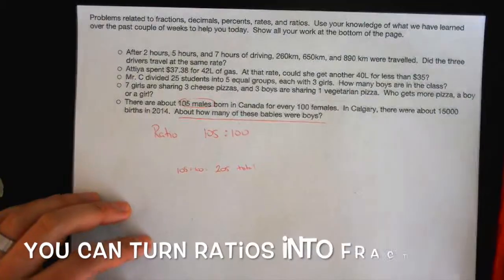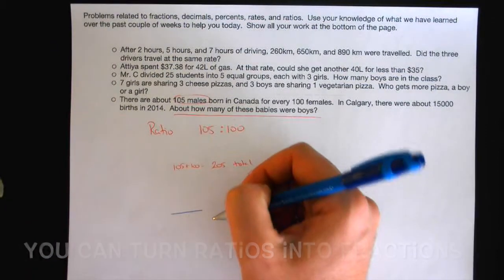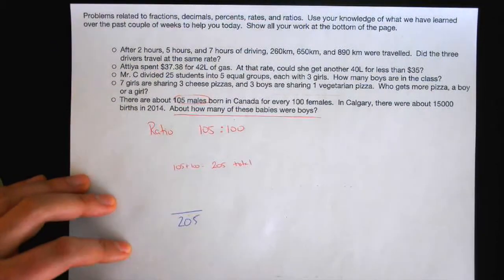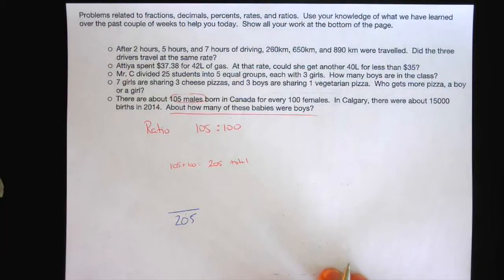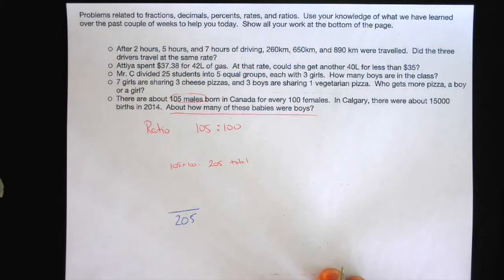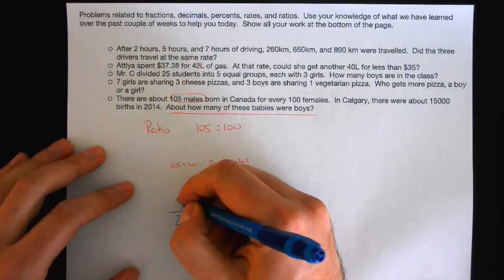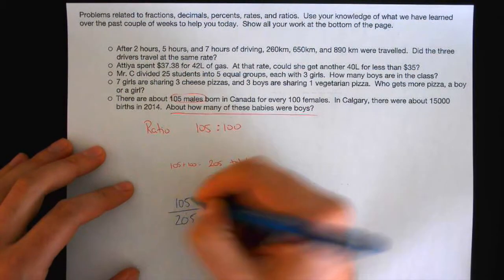Fractions. So if this is your total, is it not your, what is it, your numerator or your denominator? It's your denominator. So what am I trying to find out again? How many what? How many children were born? More specifically, how many what? How many boys? How many boys were born in the ratio? What does it say? The ratio says for every 100 people is 105. So then our numerator is 105.